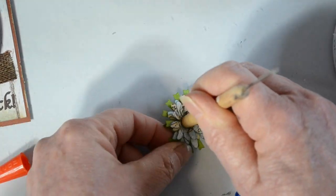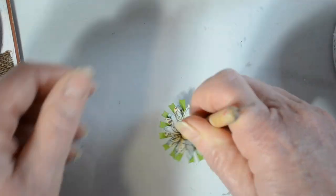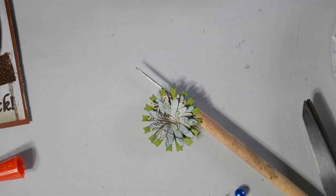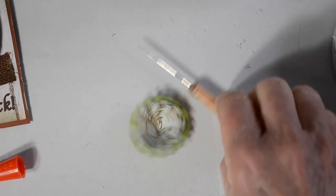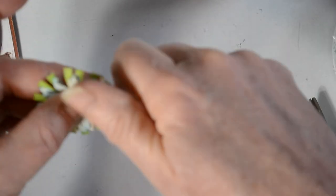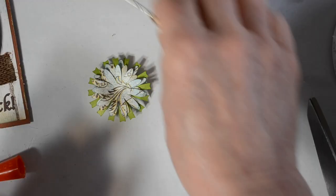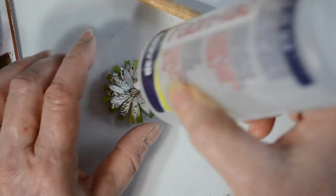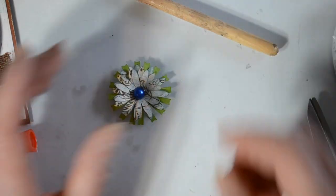There you go. Now you can really see what I'm doing. I'm going to pop that little blue pearl inside of there, and that'll finish off that little flower, and we'll just set that aside to dry until I get the other parts put together.